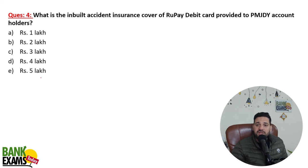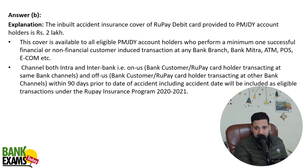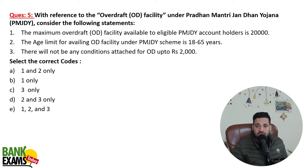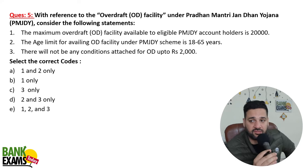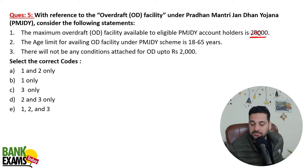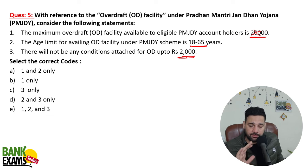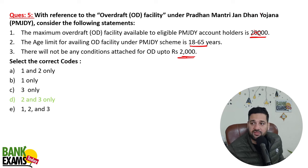What is the inbuilt accidental insurance cover on the RuPay debit card provided by PM Jan Dhan Yojana? You get ₹2 lakh insurance. Regarding the overdraft facility under Pradhan Mantri Jan Dhan Yojana: the maximum overdraft limit is ₹10,000, not ₹20,000. The age limit is 18 to 65 years — it used to be 18 to 60 but is now 65. There is no condition for OD up to ₹2,000. The first statement is false; the second and third are correct.